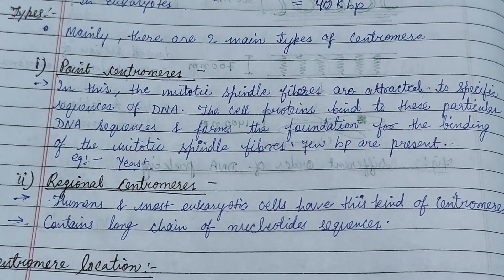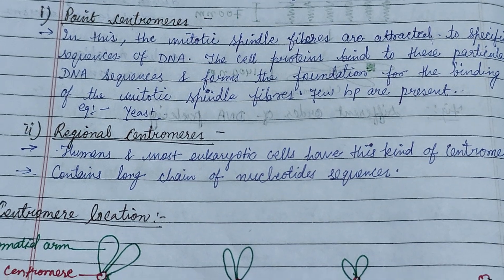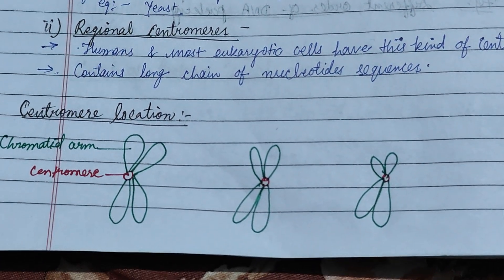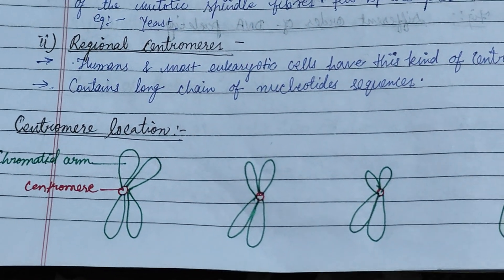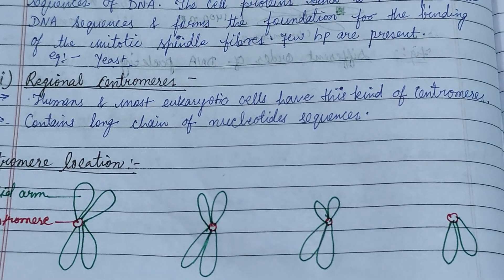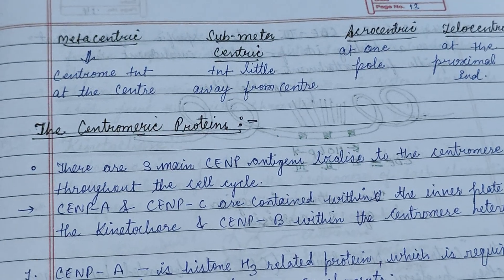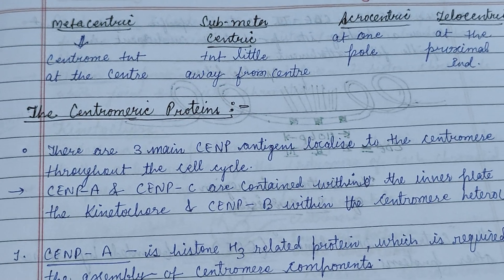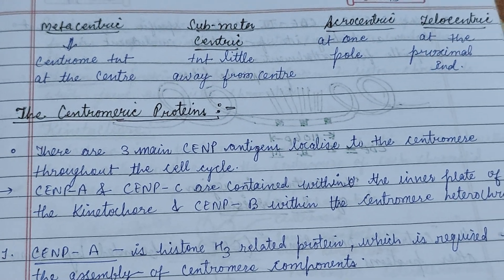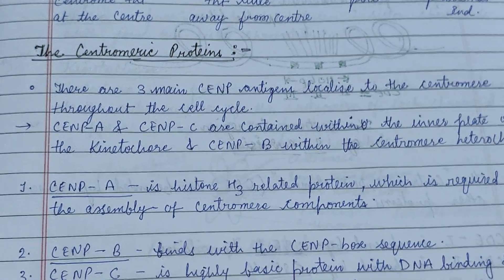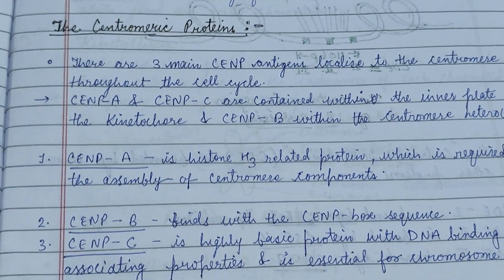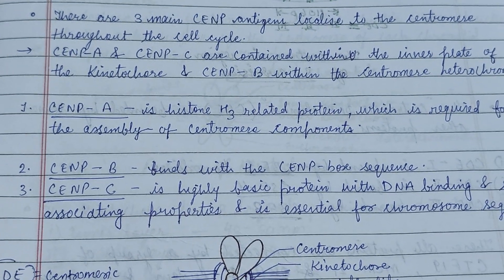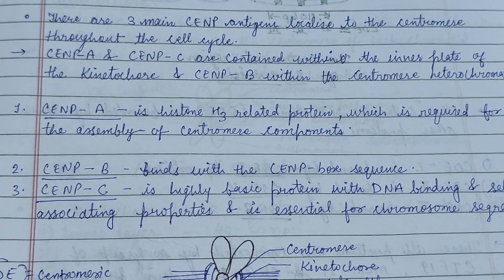There are two main types of centromere: the point centromere and the regional centromere. Based on the location of the centromere on the chromosome, the names are metacentric, submetacentric, acrocentric, and telocentric, respectively.